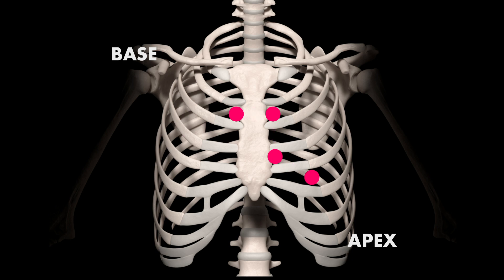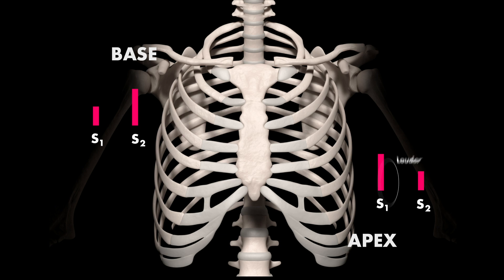As you listen at each point, keep in mind that some sounds are best heard at different points. For example, a normal S1 and S2 have different sound intensities when listening at the base compared to the apex. Classically, S1 is usually louder than S2 at the apex, and S2 is usually louder than S1 at the base.